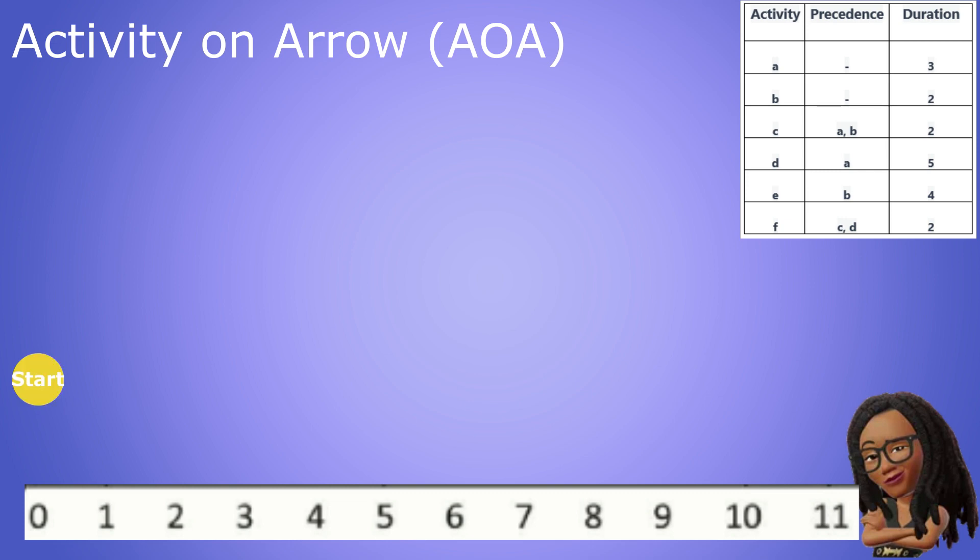First we draw our start node. We know A and B are the starting activities so we draw arrows from the start node to represent both of them. Activity A is three days long so using our timeline we draw an arrow three days in length and terminate it with a node. We do the same for activity B which is two days long.